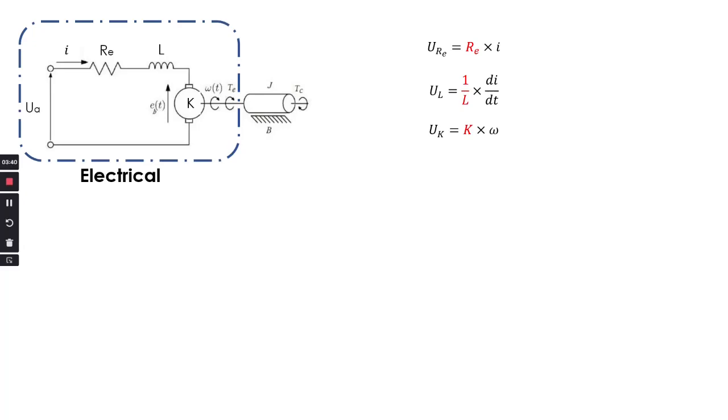The values indicated in red color are the parameters of the DC motor which we will have to set beforehand. According to Kirchhoff's law we can write Ua, which is our input, minus Ure, the voltage drop across resistance, minus the voltage drop across the inductance UL, minus the back EMF. Finally, if we put back the values of each voltage drop, then we will get this equation. This is our first equation.